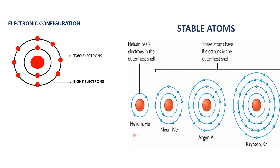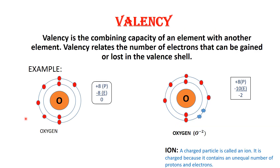But what makes other elements react with one another? The answer is valency. So students, in this lesson, we will study about valency and its types. Valency can be defined as the combining capacity of an element with another element. Valency relates the number of electrons that can be gained or lost in the valence shell. By combining capacity, we mean how many electrons an atom can gain or lose in its valence shell. The valence shell is the outermost shell of an atom.